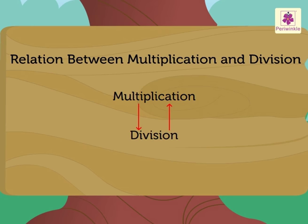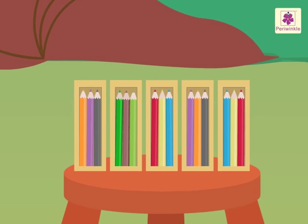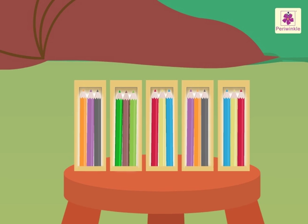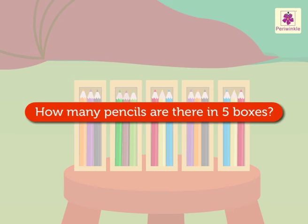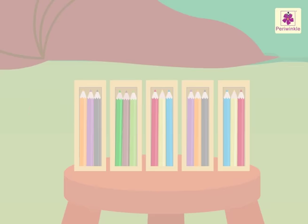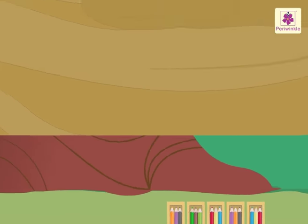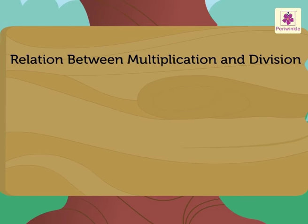Let us see how. There are 5 boxes and each box has 3 pencils. In all, how many pencils are there in 5 boxes? To get the product, we multiply the numbers 5 and 3. 5 into 3 is equal to 15.